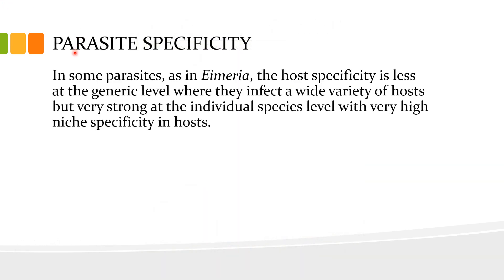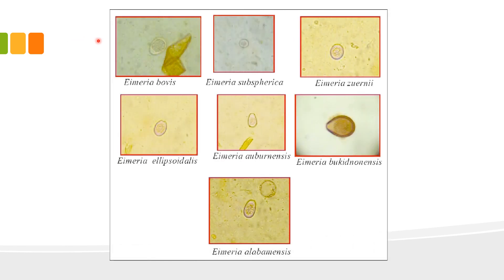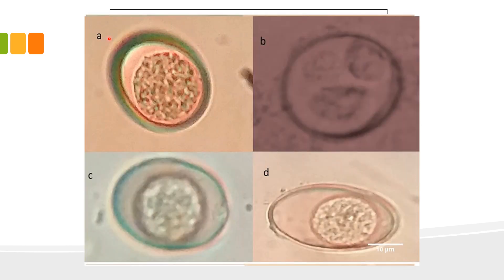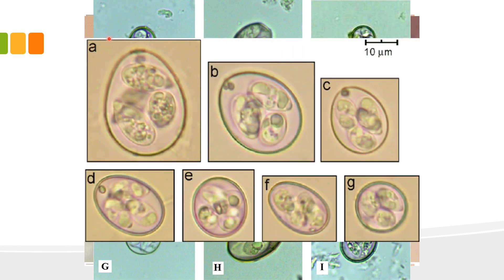In some parasites, as in the genus Eimeria, host specificity is less at the generic level — infecting a wide variety of hosts — but very strong at the individual species level, with very high niche specificity. The genus Eimeria is widespread in nature, with multiple species occurring in virtually every vertebrate host. Eimeria are protozoan organisms that invade the intestinal tract, causing coccidiosis, an enteric disease of major economic importance worldwide. The oocysts of Eimeria species infect cattle, sheep, goats, pigs, and poultry. With few exceptions, all Eimeria species are considered host-specific.